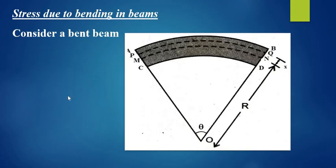Consider a bent beam like this. In this beam, AB is the topmost filament of the beam, CD is the bottommost filament of the beam, MN is the neutral axis of the beam.